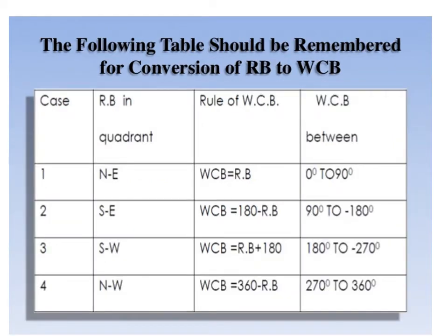This slide refers to conversion of reduced bearing to WCB. We have four cases: north-east, south-east, south-west, and north-west quadrants. Case 1: for a line lying in the north-east quadrant, WCB is equal to reduced bearing, and the value of WCB is 0 to 90 degrees.